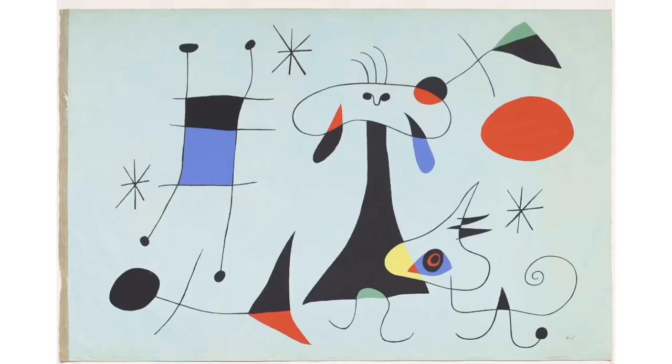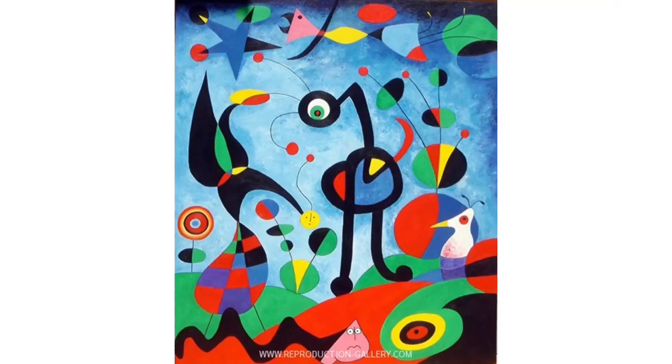He was a painter, a ceramist, and a sculptor. This is some of his artwork. He was known for his use of bright colors and simple shapes.